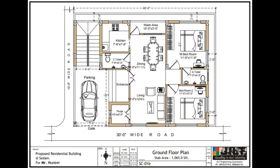Then we have a master bedroom. The dimension of this master bedroom is 11 feet by 11 feet 9 inches. It has an attached toilet; the dimension of that toilet is 7 feet by 4 feet.